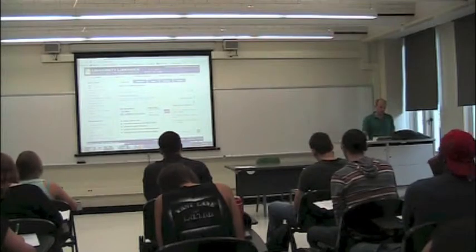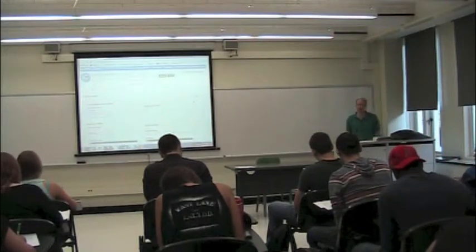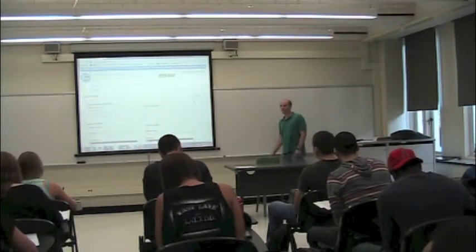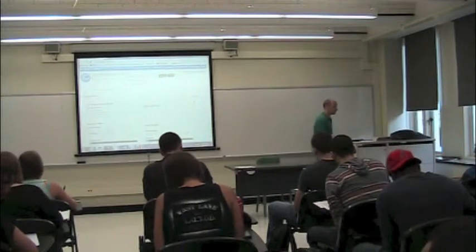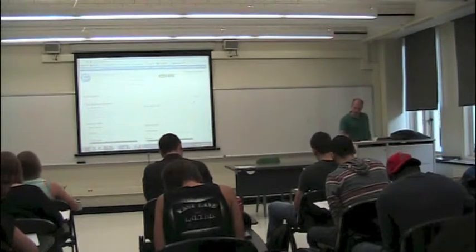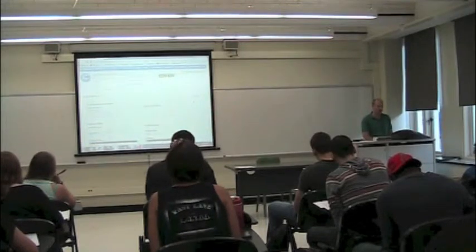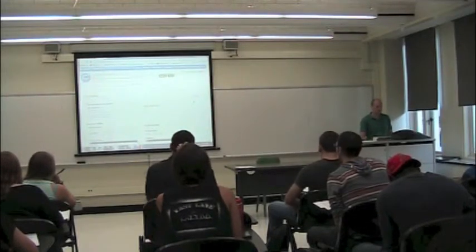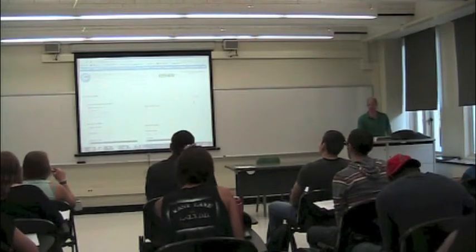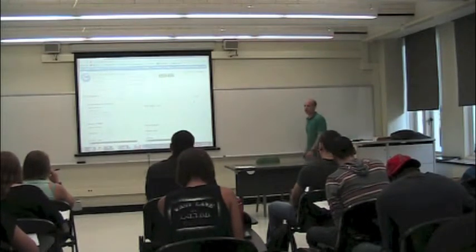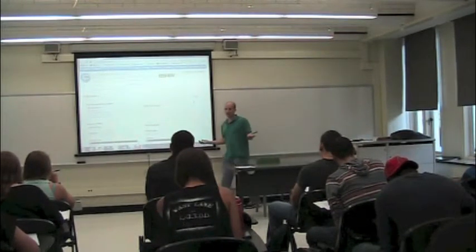So there's the Philosopher's Index, and if I search, for example, Kant, if I just search here, I'm going to get 30,000 entries.